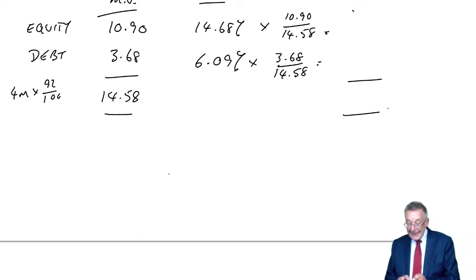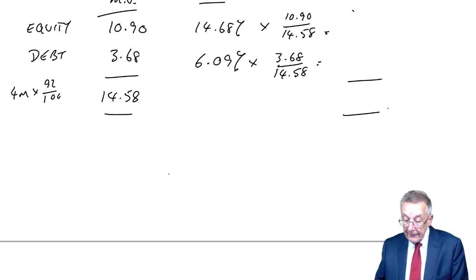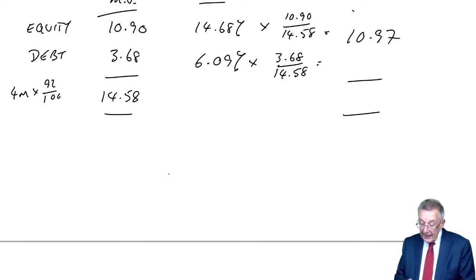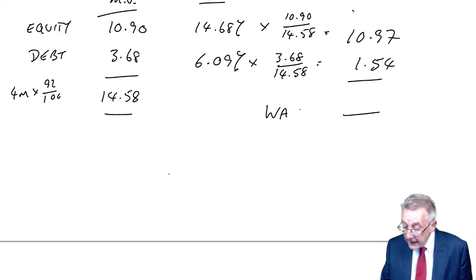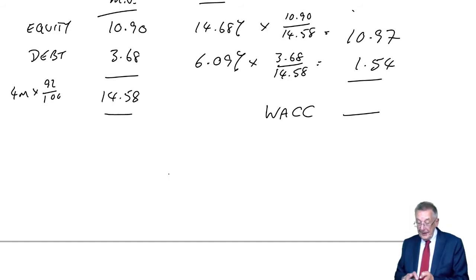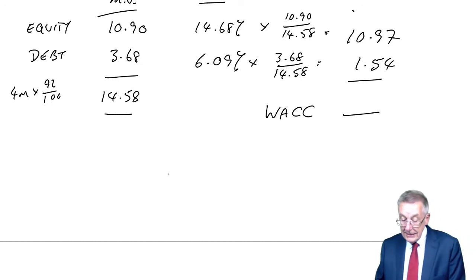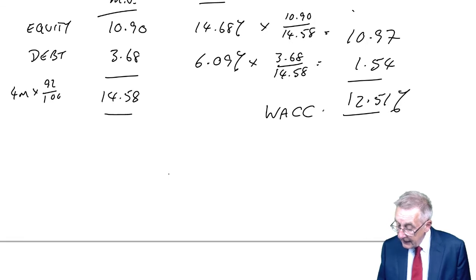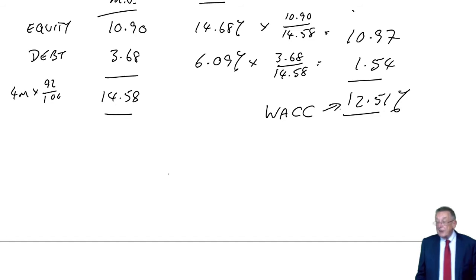So let's do the arithmetic. 14.68 times 10.9 divided by 14.58 is 10.97. And debt, 6.09 times the weighting, 3.68 divided by 14.58 is 1.54, given a total or a weighted average of 12.51%.